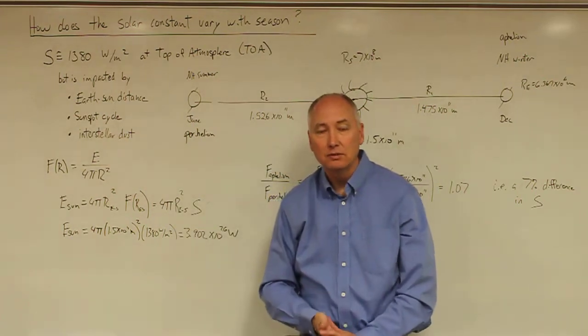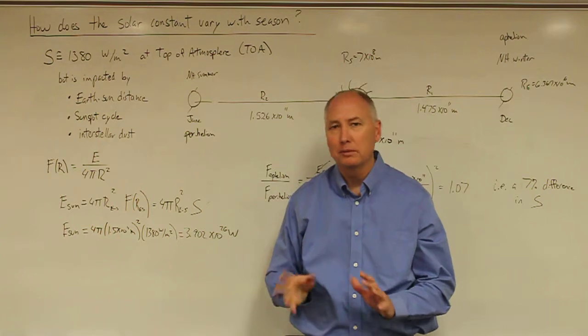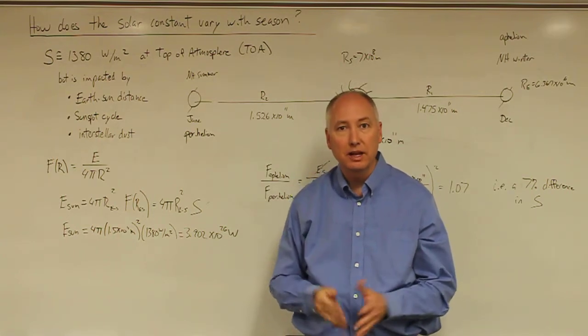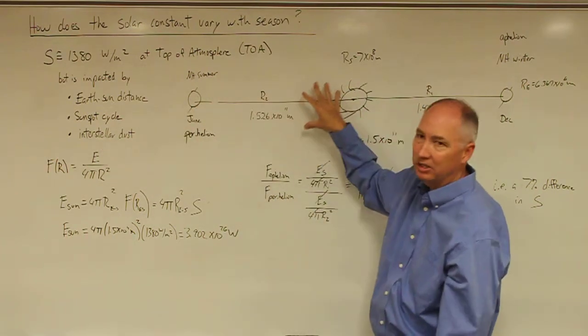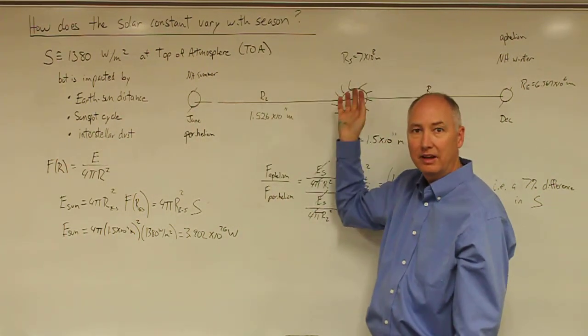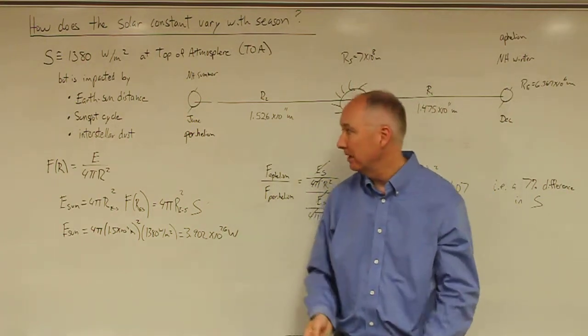It's affected by the sunspot cycle. We know that the solar output changes by about 0.1% over the lifetime of the sunspot cycle. It's also possible that you can have interstellar dust between the Earth and the Sun that would absorb some of that solar radiation and prevent it from getting to the Earth.